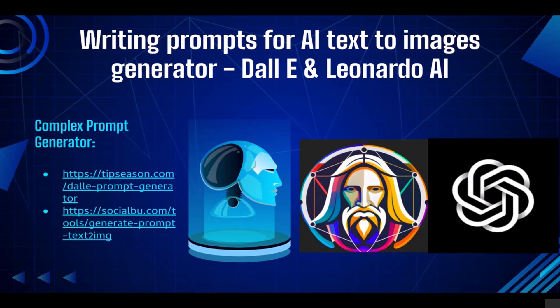Welcome back to the course. In the previous session we already learned prompt engineering for ChatGPT, and in this session we're going to learn prompt engineering for AI text-to-image generators. There are many different AI text-to-image generators out there — MidJourney, Leonardo AI, Stable Diffusion, DALL-E, Hotpot AI, Playground AI, and many more. In this course we're going to concentrate on two: DALL-E and Leonardo AI.